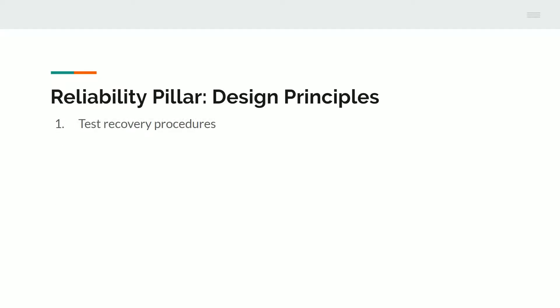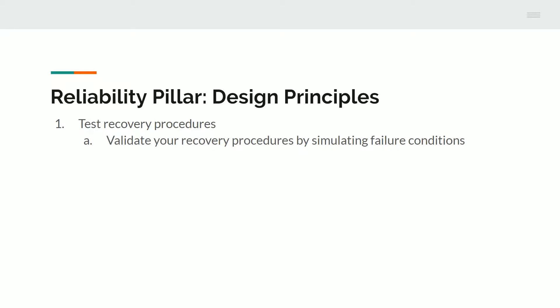The best way to be reliable is to anticipate failures before they happen and prevent them. The design principles of reliability revolve around simulating failure conditions and validating recovery procedures. You have tools where you can explicitly shut something down and see how you recover from it, or test your automated recovery procedures. CloudWatch can alert you if something fails, and Autoscale can log and scale up and down so you can quickly be alerted if any anomalies happen.